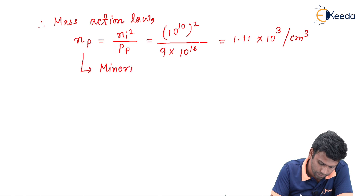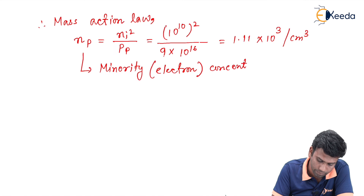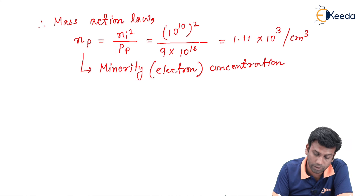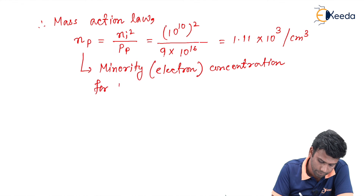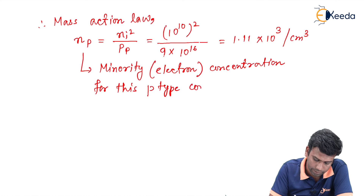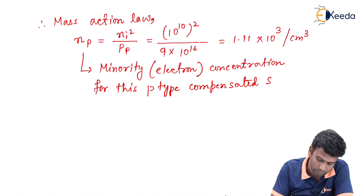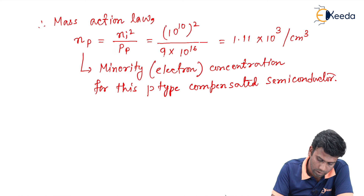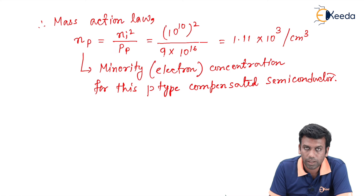This gives us the minority carrier, that is the electron concentration, for this p-type compensated semiconductor. This is all about numerical one. Thank you.